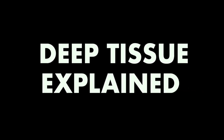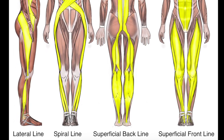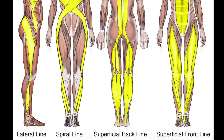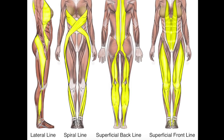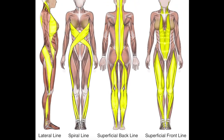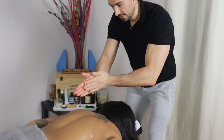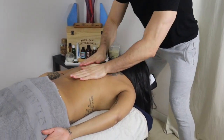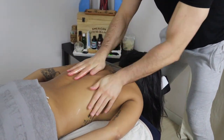Hi guys, this is Max and today we're going to give a scientific reasoning behind the deep tissue massage. To start, we're going to consider the superficial back line from Thomas Myers' Anatomy Trains book — a really great book to improve your work — and the functional line on the back and the lateral line, especially when working on the glute. Right now I'm warming up the tissue of my client.